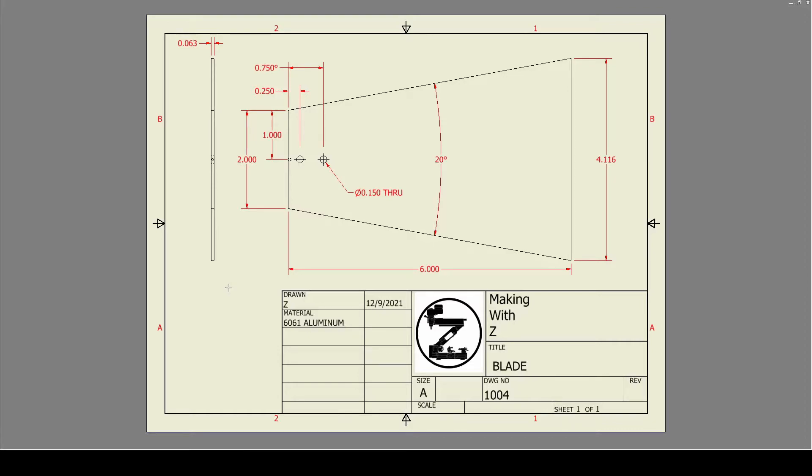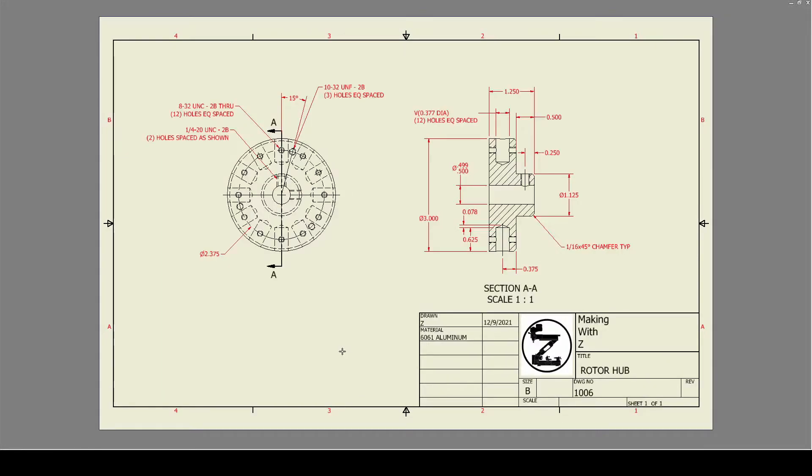This is the drawing of the rotor hub. You can see all the different features: the holes, the tapped holes, and the sizes. It's a good reference if you're thinking about doing something similar. Be careful with the diameter of these holes. If you're putting aluminum rods into an aluminum piece of metal, this seems to work: 0.377 inches with the 0.375 inch rod gives you enough clearance for it to work.